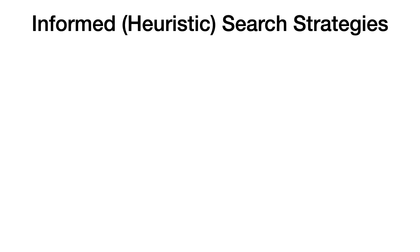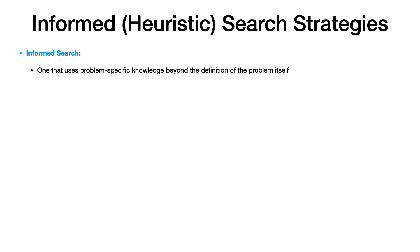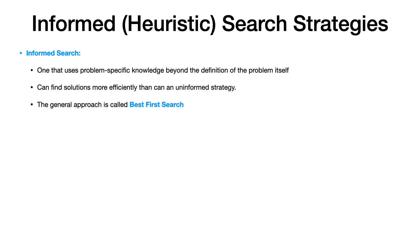In the informed search techniques, also called heuristic search techniques, we will be using problem-specific domain knowledge beyond the definition of the problem. These techniques are called informed search techniques, also called heuristic search techniques. Our goal is to find a more efficient solution as compared to the uninformed search strategy.